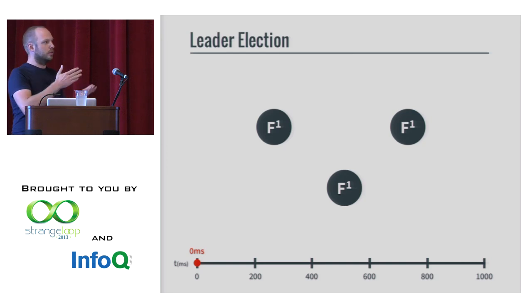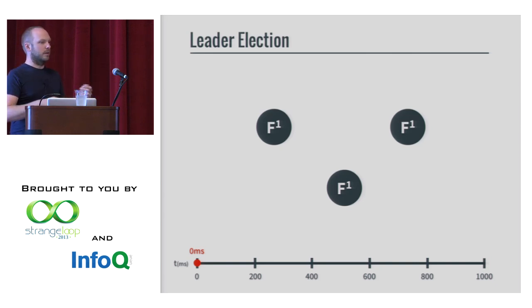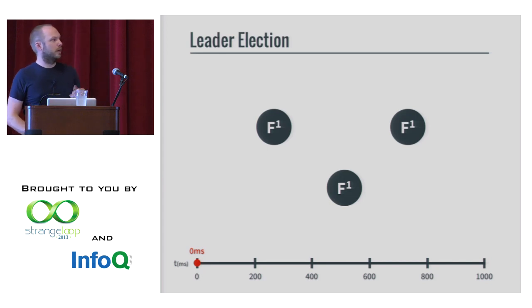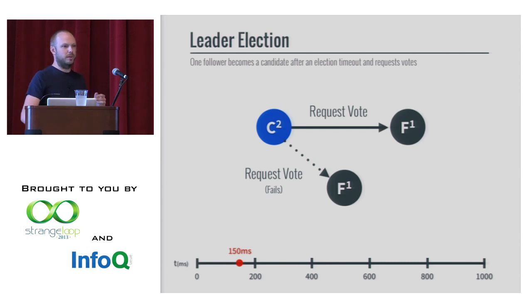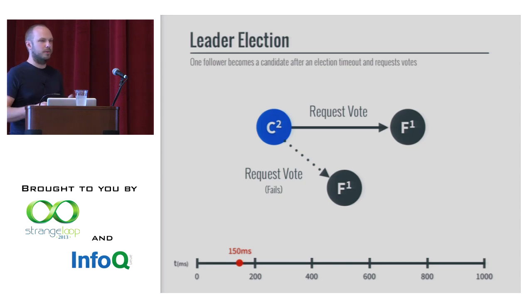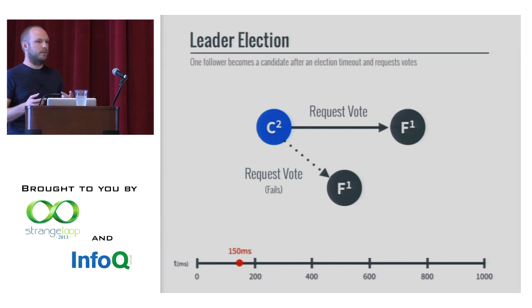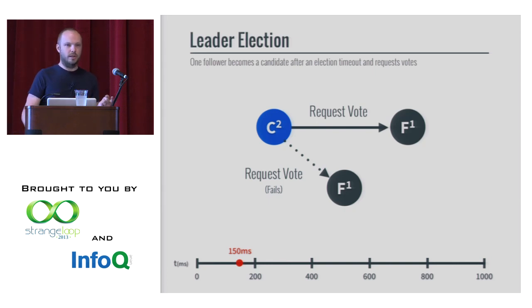Terms keep going, and the leader will stay in a term for as long as it can. If it gets deposed or dies, a new one will be elected in a new term. They're all in term one right now. They all wait around for the election timeout — the length of time if they haven't heard from a leader. It's randomized, between 150 milliseconds and 300 milliseconds. Then one of them flips over to a candidate — hopefully just one. We're talking about the happy path here.